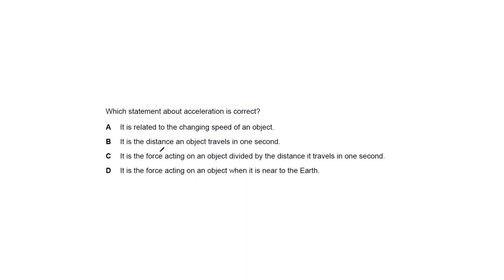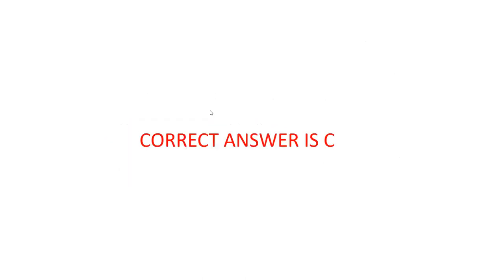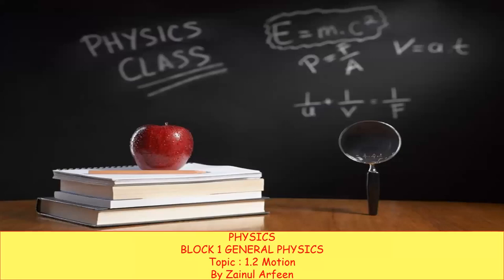Which statement about acceleration is correct? Option A — it is related to the change in speed of an object. Option B — it is the distance an object travels in 1 second — that is wrong; that is speed. Option C — force acting divided by distance — wrong, the expression is change in velocity. Option D — force acting when near Earth — that is gravity, not acceleration. So option A is the right answer: acceleration is the change in velocity, written as delta V divided by time.